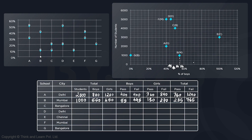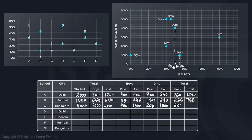School C is from Bangalore with 4000 students. 50% are boys — 2000 boys and 2000 girls. Boys passing percentage is 20%, so 400 boys passed, 1600 failed. Girls passing percentage is 10%, so 200 girls passed, 1800 failed. Total passed: 400 + 200 = 600 out of 4000. Remaining 3400 students failed.